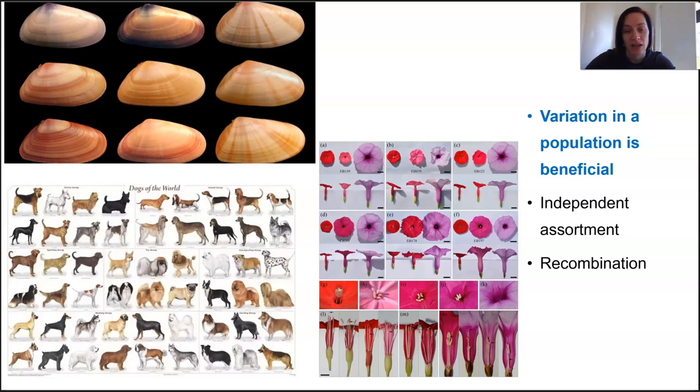This variation arises from independent assortment, from recombination during meiosis, from random fertilization of the gametes, but also from mutations that occur to create new alleles and it also changes in the way that genes are expressed, like in epigenetic changes.